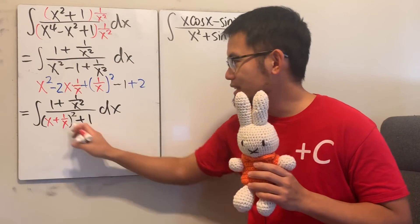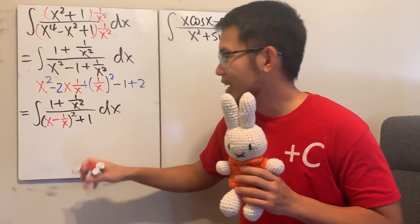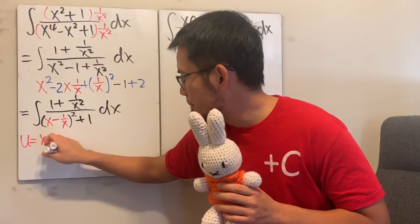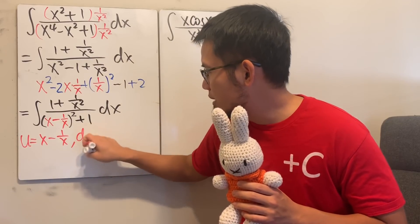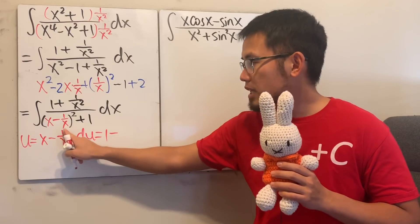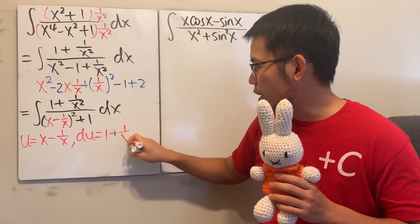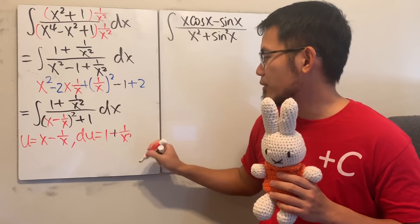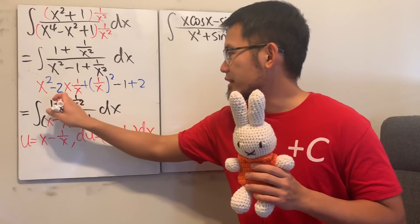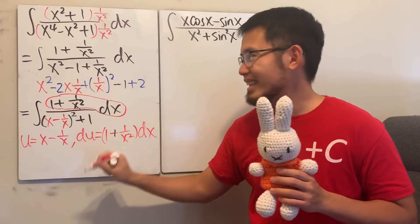Then, as we can see, we can just let u. Sorry. This right here should be a minus. Right? Minus. Alright. Then here, we're just going to let u equal to x minus 1 over x. And you see the du will just be 1 minus. But the derivative of 1 over x is negative 1 over x squared. So, it becomes a plus now, which is very good. And the best part is the top is precisely our du.